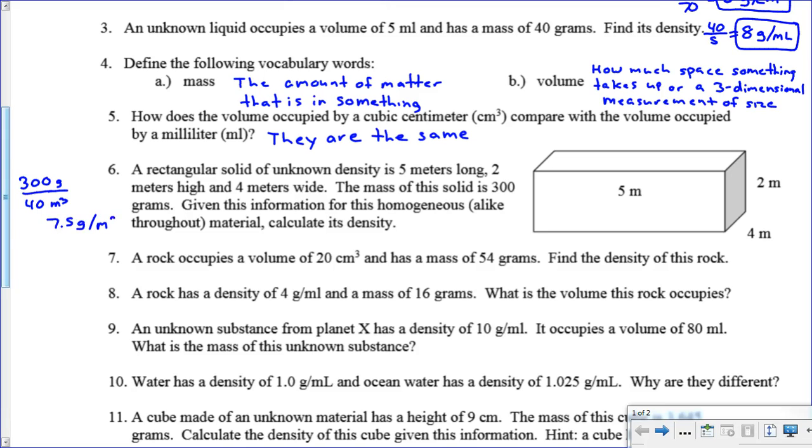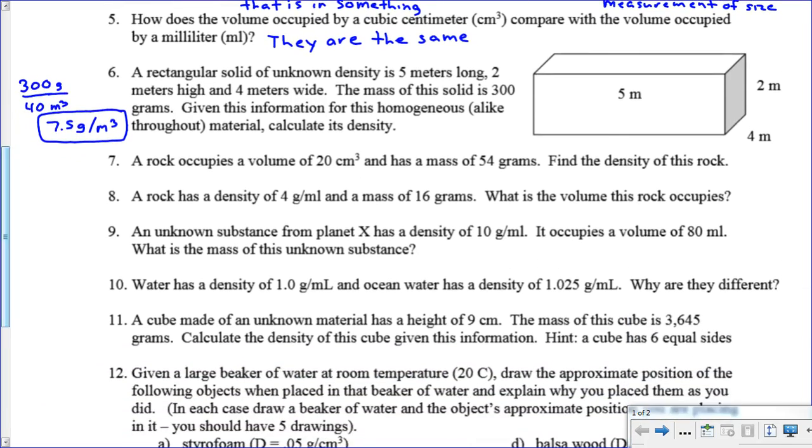Since we're talking meters cubed here and not centimeters cubed, that is a very low density. It's 0.0075, even smaller than that, it's like a millionth of the size, so 0.00000075 grams per centimeter cubed. So it's almost nothing, lighter than air even, so very low density for whatever this object is.